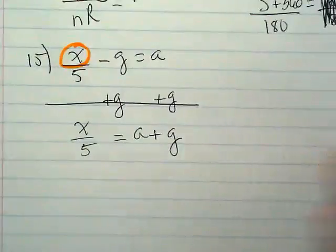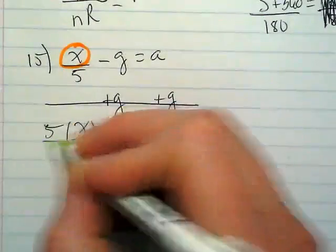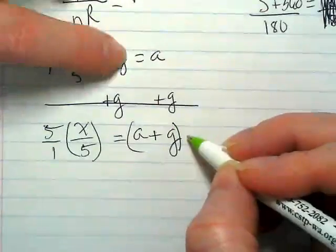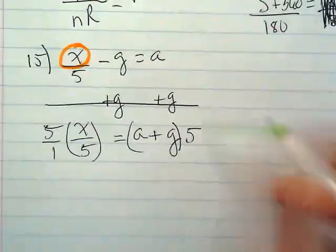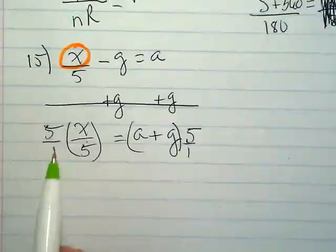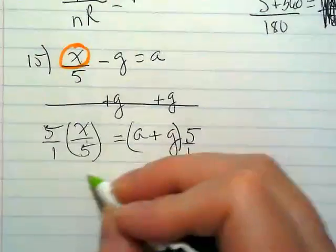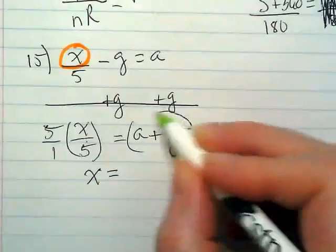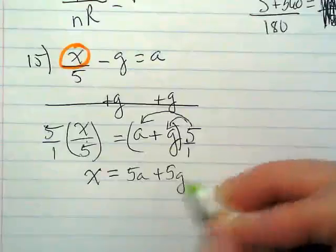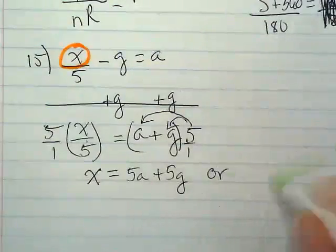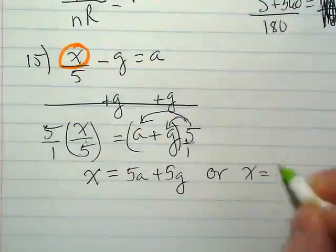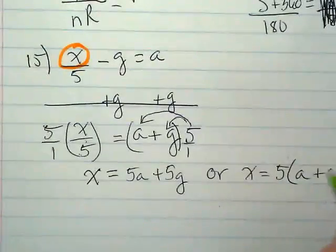X divided by 5 equals A plus G. What do you guys want me to do next? Do the reciprocal. Multiply by the reciprocal. I could have started with that, but it actually would have been more work because I would have had to distribute it up here. So on the left side, 5X divided by 5 is going to leave me X. And then I'm going to distribute this backwards, and I get 5A plus 5G. Or it could be left undistributed as X is equal to 5 times A plus G.